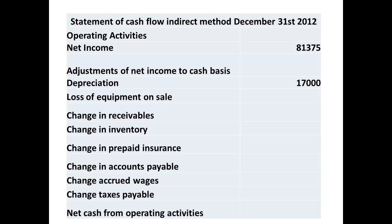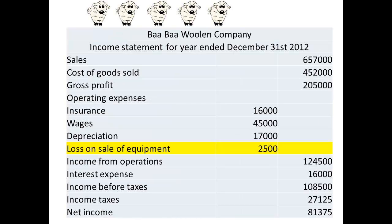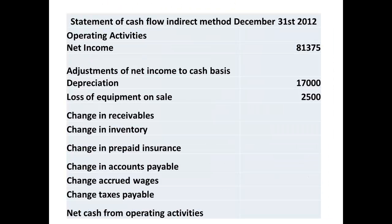Having added the $17,000, we now look for any figures that relate to the sale of equipment. A loss of $2,500 is shown on the income statement and we will add this back, so we enter a figure of $2,500 to our cash flow statement.